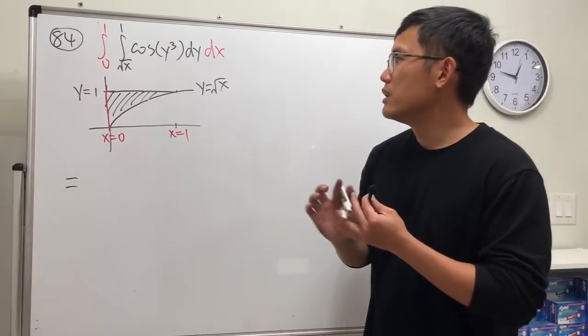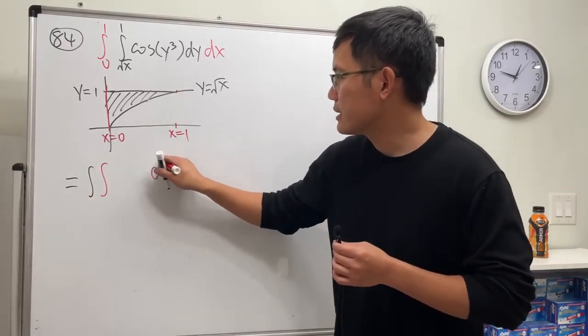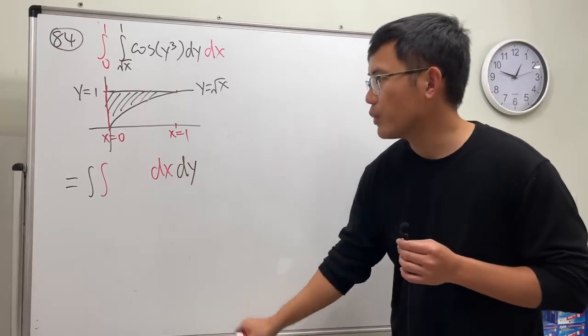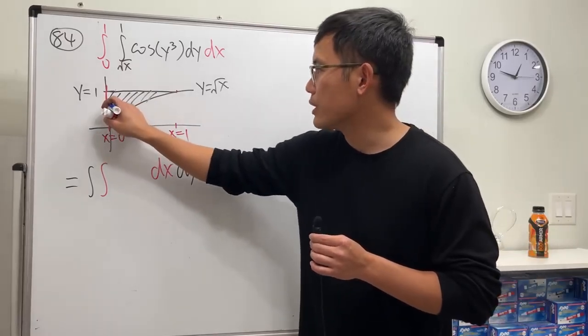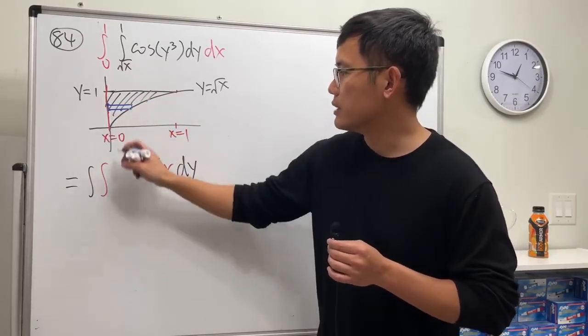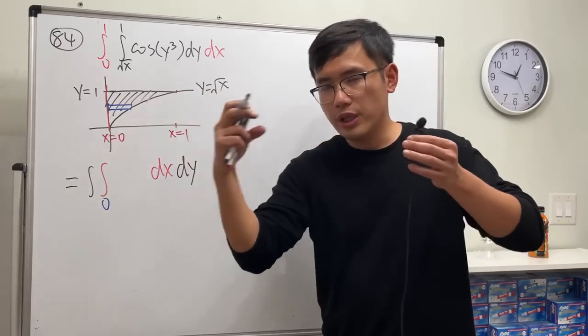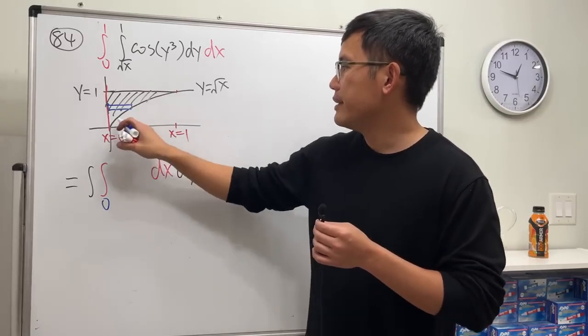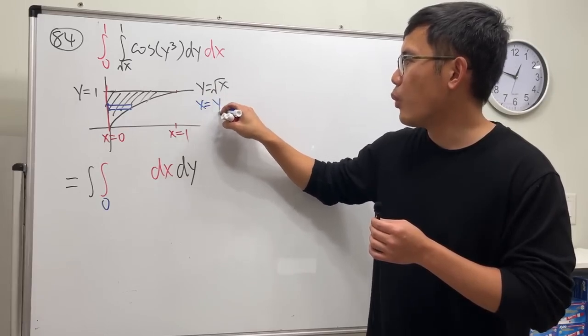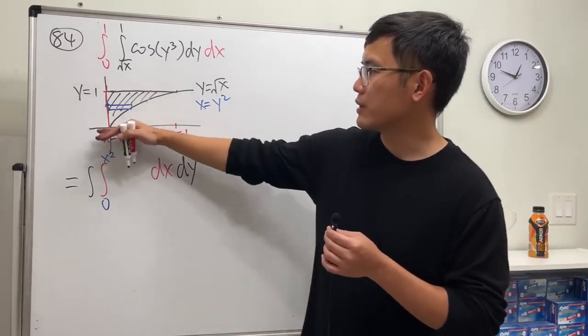How do we change the order of integration? We switch this - we want the dx to go first and then dy. If dx goes first, that means we want to look at this from left to right, so we draw a horizontal rectangle. X starts with zero, that's good, but you see this rectangle - it changes. The horizontal length changes at y equals square root of x, meaning x is equal to y square. How about y though? Y goes from zero to one.